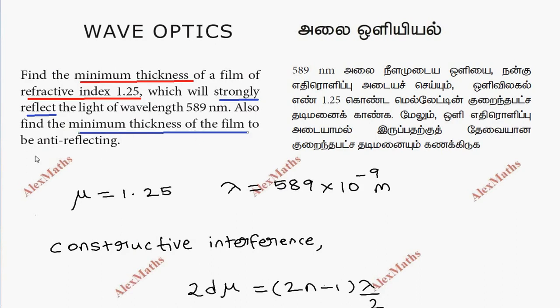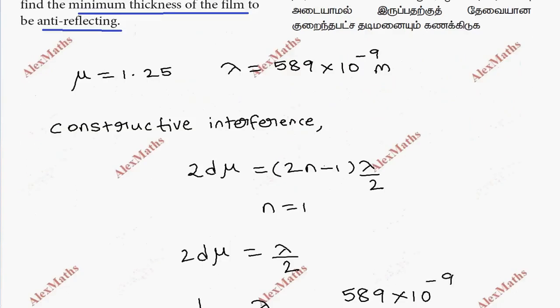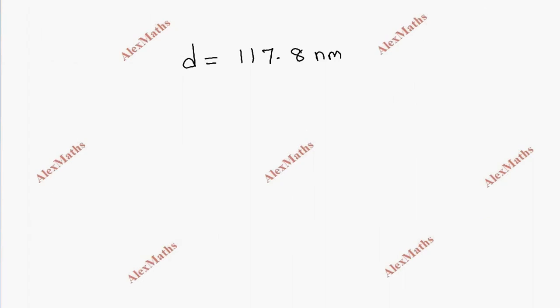Now for anti-reflecting, that is destructive interference, the condition is 2d mu equals n lambda.